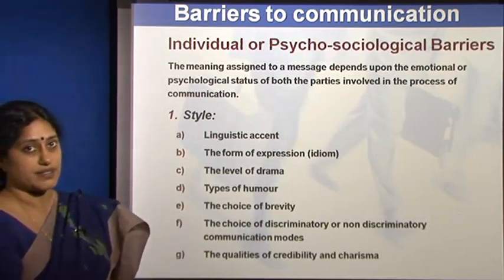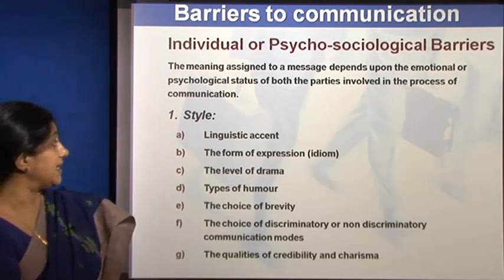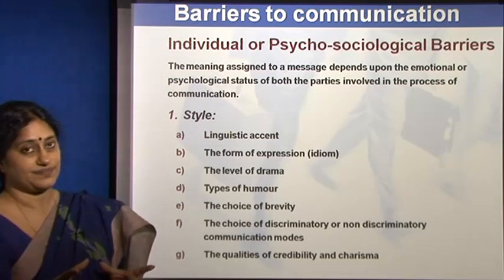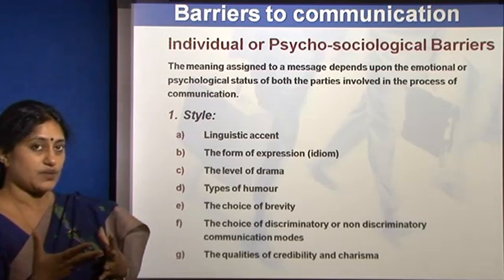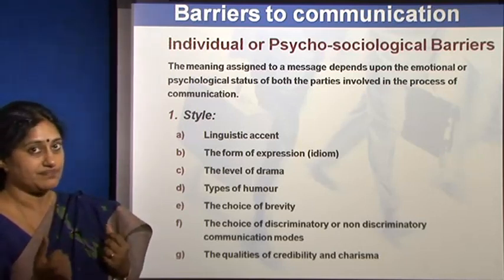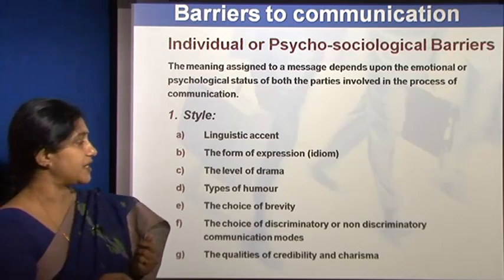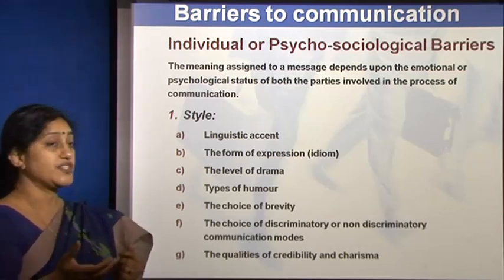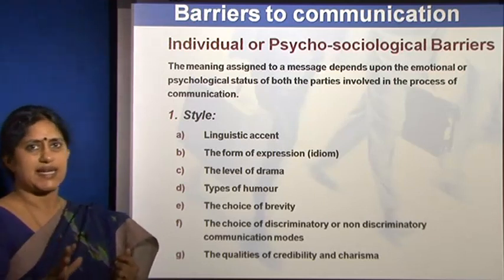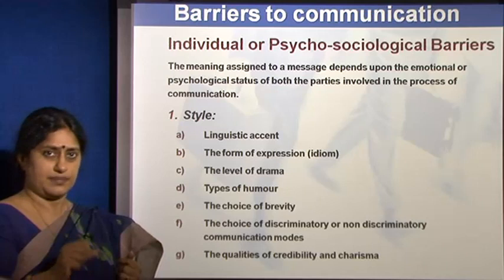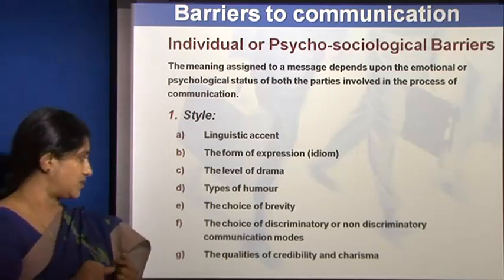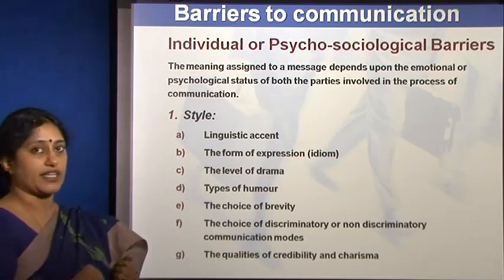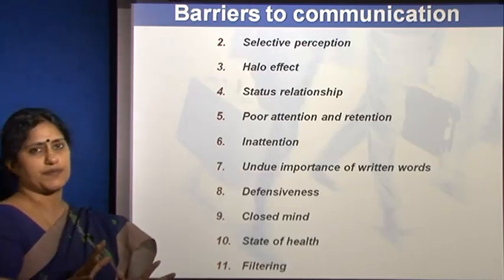Individual or psycho-sociological barriers include style and linguistic accent — even within India, different regions have different accents and may not differentiate between similar sounds. Other factors include form of expression, use of idiom, level of drama, types of humor, and choice of brevity. Some people use lengthy styles of talking or writing, while brevity can be a plus as long as it still conveys the full message. The choice of discriminatory or non-discriminatory communication modes also plays a role.